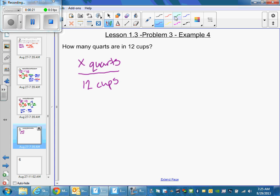Well, it is common knowledge that there are four cups in one quart. This is also found in your conversion table in your book. This is information you can Google.